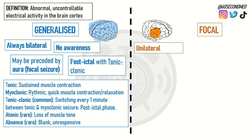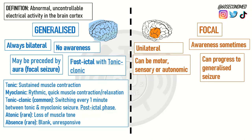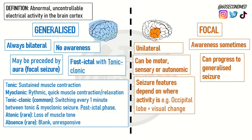Focal seizures, on the other hand, tend to be unilateral and therefore only affect one side of the body. There is sometimes awareness that the patient retains during a focal seizure. The focal seizure can be motor, sensory, or autonomic, and it can progress to a generalized seizure, such as what happens sometimes with an aura. The seizure features depend on where the activity is, which is why it can be a motor, sensory, or autonomic type of seizure.